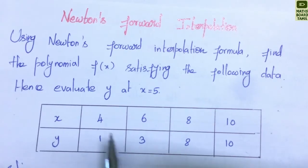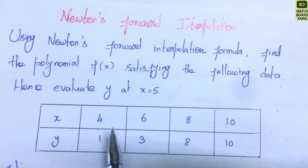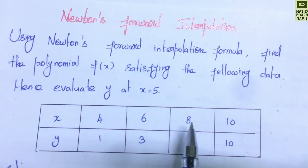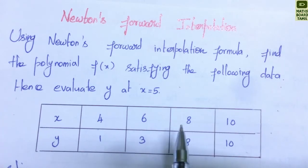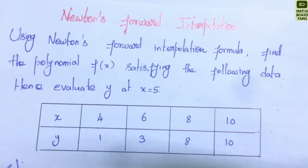There is an equal interval. Equal interval: 6 minus 4 = 2, 8 minus 6 = 2, 10 minus 8 = 2. So h = 2.